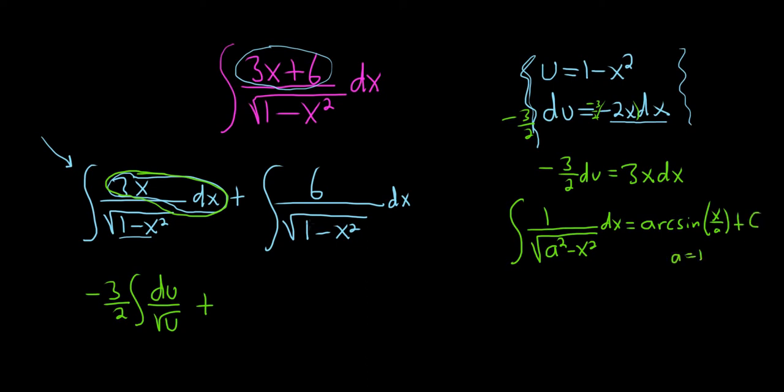So a here is 1, right, because 1 squared is equal to a squared, so a should be equal to 1. So this is just going to be, pull the 6 out, so you get 6 arcsine of x over 1. And you can write this c or you can wait, I'm going to wait to the very end to write it.